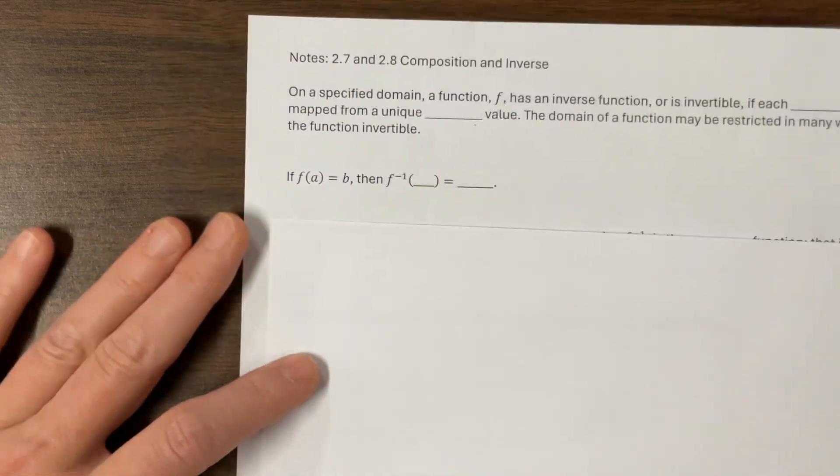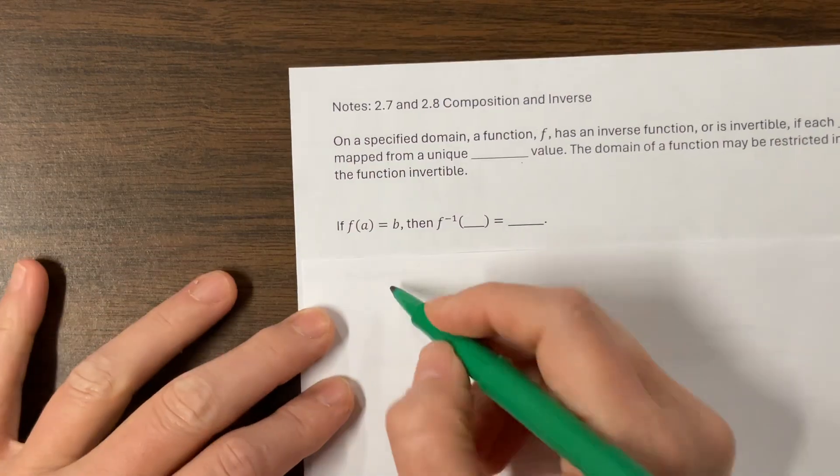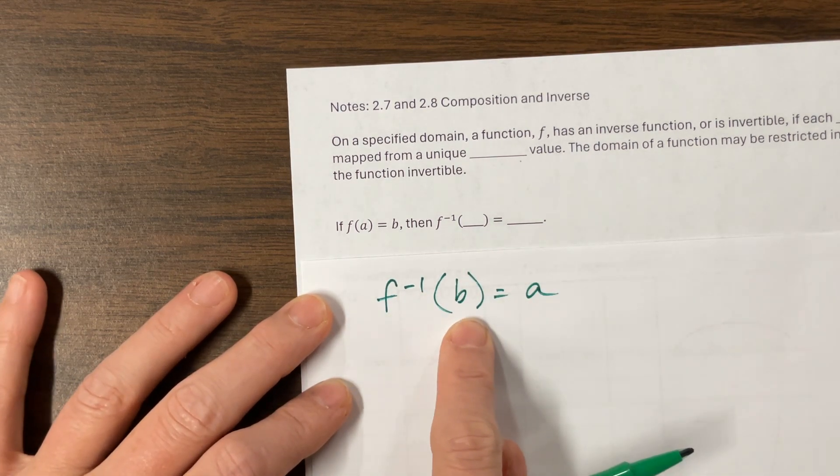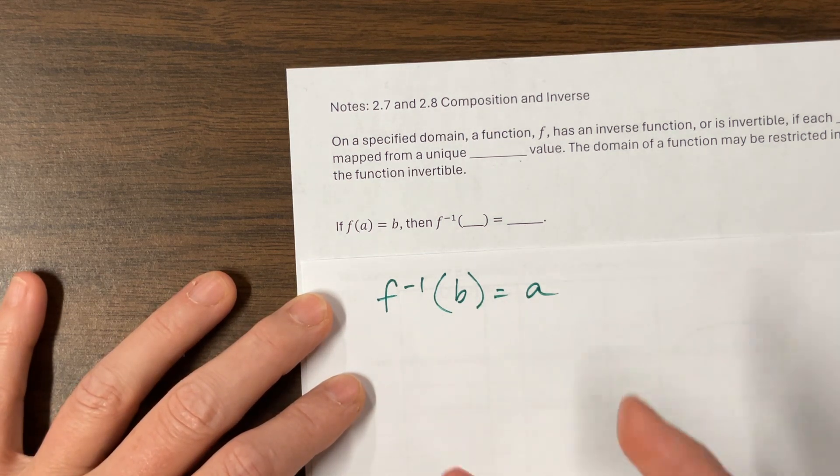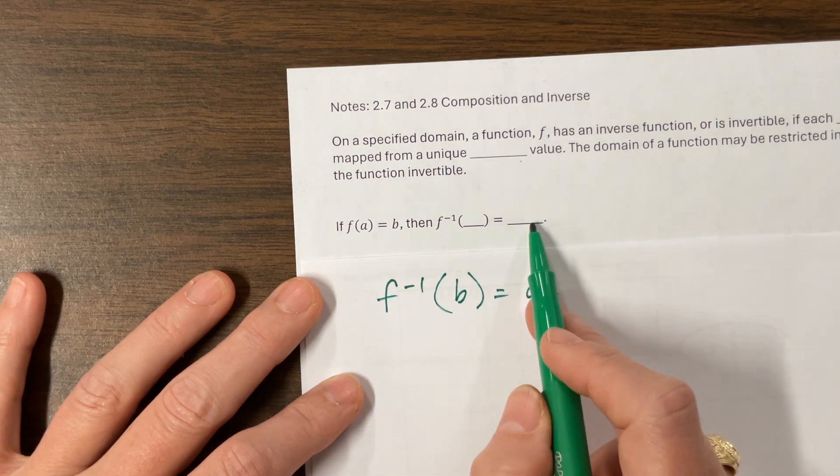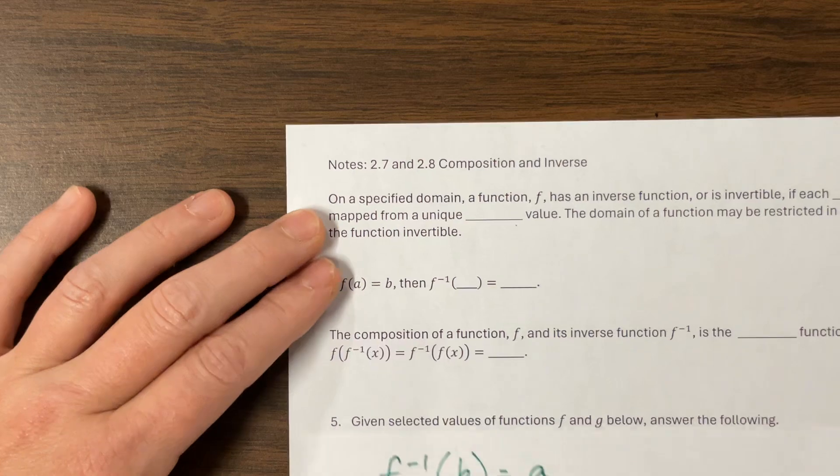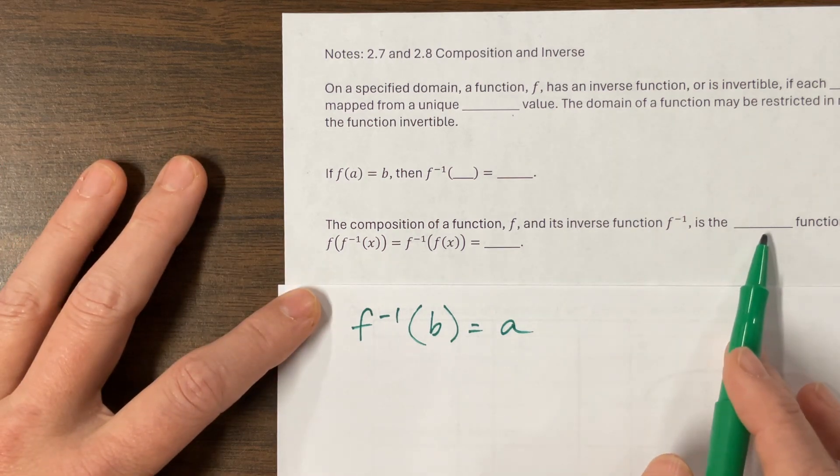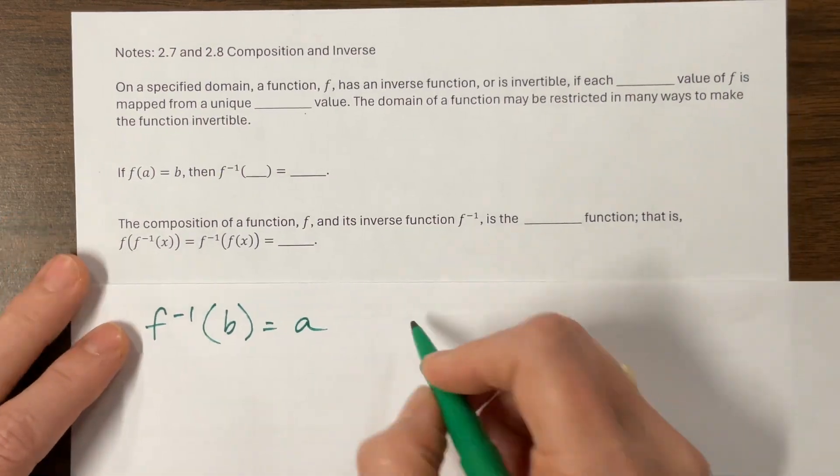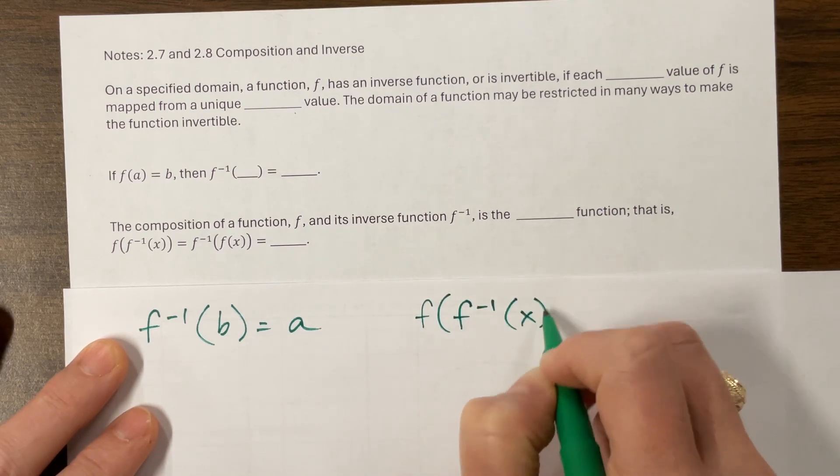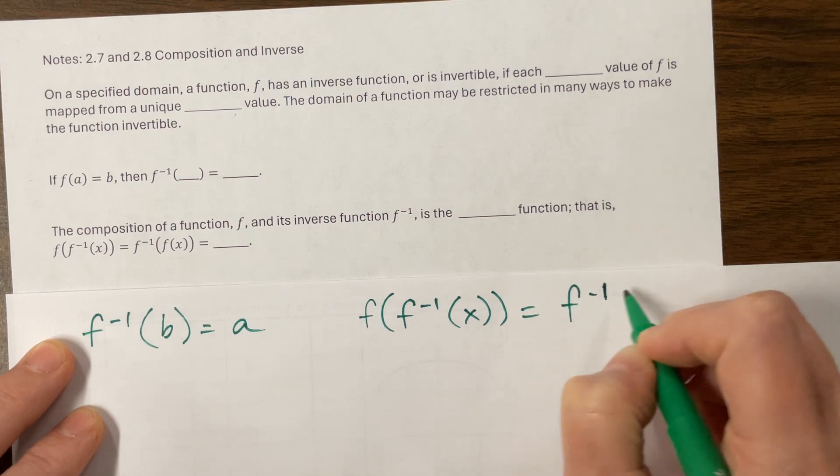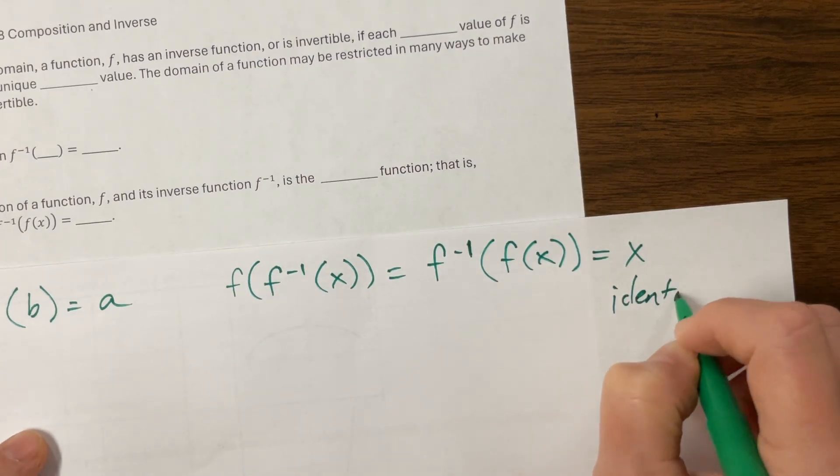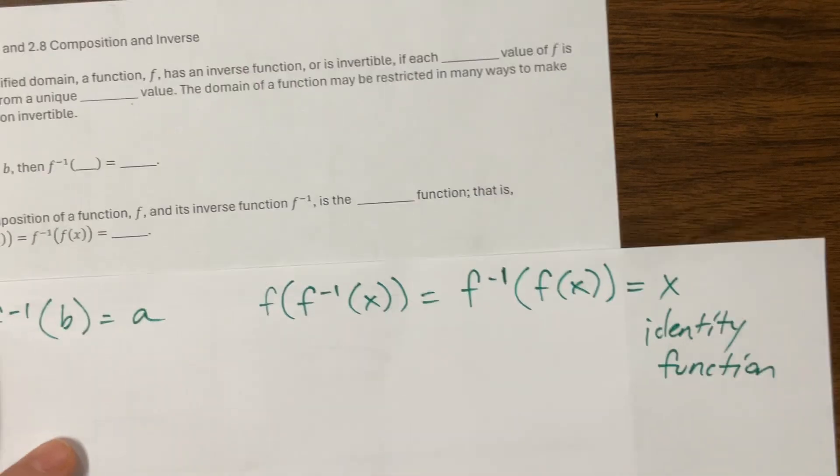On this next piece here, if f of a equals b, then the inverse f of b equals, the inverse of f, f to the negative 1 of b, might be how we say that, equals a. So basically, we have switched our x and our y's. What was an x value becomes a y value. What was a y value becomes an x value. The composition of a function f and its inverse function is the identity function. That is, so basically what happens is f of its inverse of x equals the inverse of f of x, and both of these are equal to x right here, which is the identity function. And this is how we do an algebraic proof.